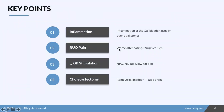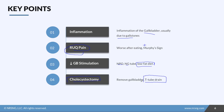To recap: cholecystitis is inflammation of the gallbladder that makes it difficult to digest food and is usually caused by gallstones. Patients experience severe right upper quadrant pain worse after meals and present with a positive Murphy's sign. Decrease gallbladder stimulation by keeping the patient NPO, using an NG tube, or placing them on a low fat diet. The best treatment is cholecystectomy, and post-operatively they'll have a T-tube drain to keep the ducts patent while they heal.